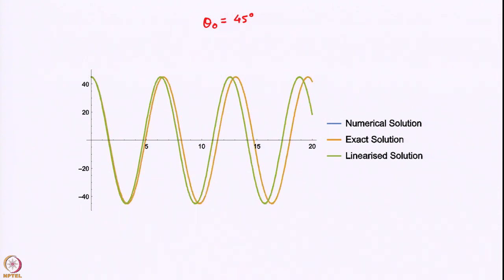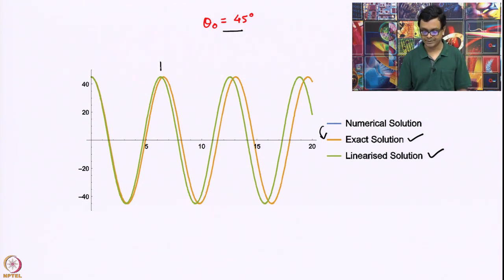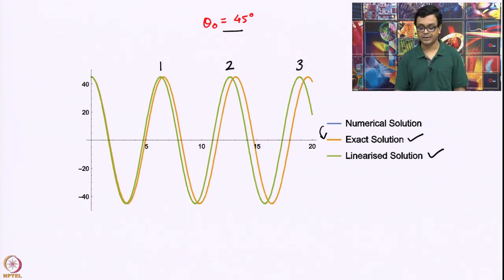Let us go further to larger angles. Now I have taken a much larger angle: pi by 4. You can now see visible differences between the exact solution and the linear solution. The numerical solution still lies on top of the exact solution. After one oscillation there is some difference; after two oscillations the difference increases; after three oscillations the difference becomes very pronounced.